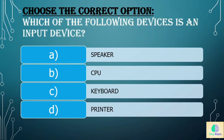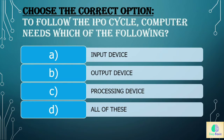Choose the correct option. Question one: which of the following devices is an input device? The options are a) speaker, b) CPU, c) keyboard, d) printer — and the answer is c) keyboard. Question two: to follow the IPO cycle, a computer needs which of the following? Options are a) input device, b) output device, c) processing device, or d) all of these — and the answer is d) all of these.